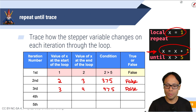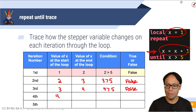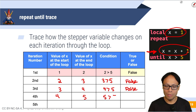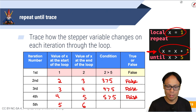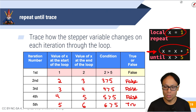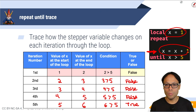Continuing: we have four, four plus one is five, and five greater than five is still false. Then we have five, five plus one is six, and six greater than five — that's finally when our condition is true, and that is when our loop finally ends.